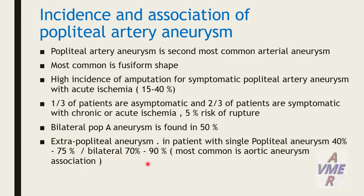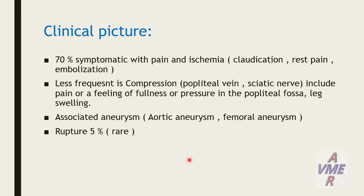With bilateral popliteal artery aneurysm, 70–90% have extra-popliteal aneurysm association, most commonly aortic aneurysm. Approximately 70% are symptomatic with pain and ischemia, claudication, rest pain, and embolization. Less frequent presentations include compression, popliteal pain, sciatic nerve involvement — including pain or feeling of fullness — or pressure in the popliteal fossa, and leg swelling.